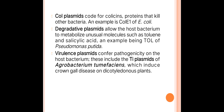Third, Col-plasmids code for colicin, a protein that kills other bacteria — an example being Col-E1 of E. coli. Fourth, degradative plasmids allow the host bacterium to metabolize unusual molecules such as toluene and salicylic acid — an example being the TOL plasmid of Pseudomonas putida. Fifth, virulence plasmids confer pathogenicity to the host, including the Ti plasmid (tumor-inducing plasmid) of Agrobacterium tumefaciens, which induces crown gall disease on dicotyledonous plants.